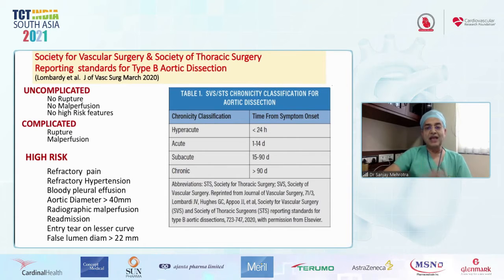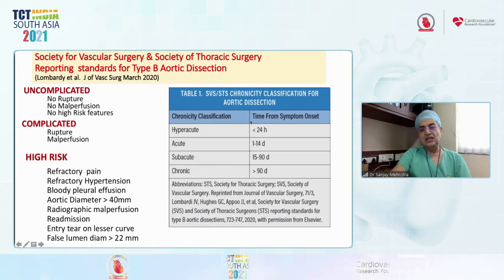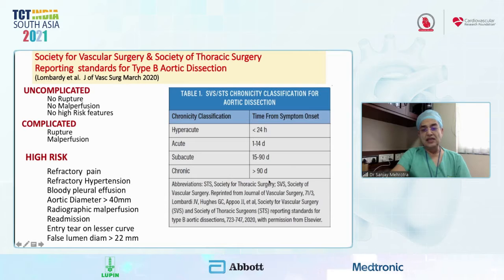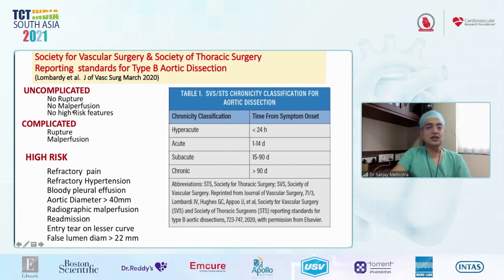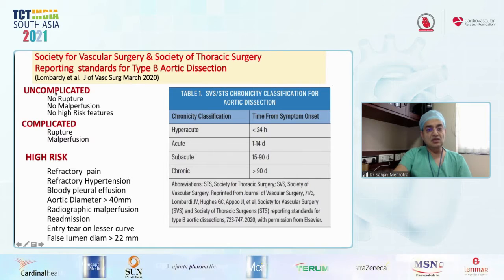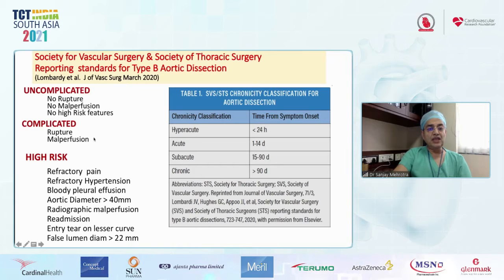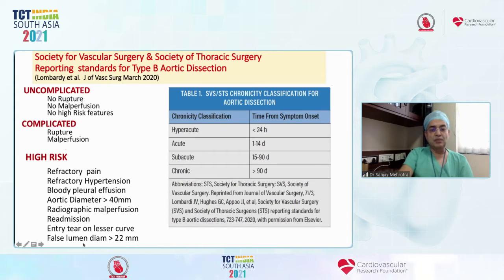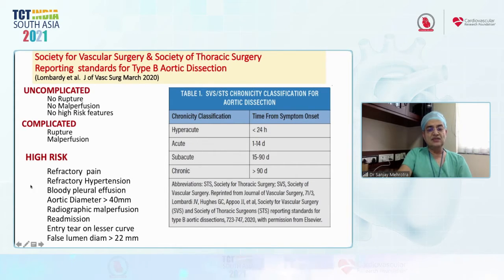Regarding timing: any dissection less than 24 hours is called hyperacute; from 1 to 14 days it is acute; 2 weeks to 3 months is subacute; and beyond 3 months or 90 days is chronic dissection. An uncomplicated dissection has no evidence of rupture, no malperfusion, and no high-risk features, while a complicated one involves rupture or malperfusion.